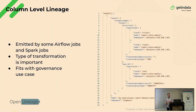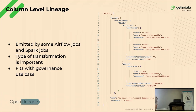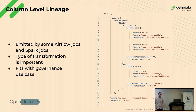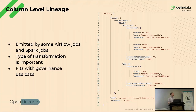Column-level lineage is also implemented as a facet in Open Lineage. In this example, we have a part of an event — the output datasets. We see that this is some BigQuery table and we have information about two columns. The activities column is an aggregation of two columns — clicks and views — from a Postgres table. The user ID column is just a copy of the UID from the Postgres table. The transformation information here is also really important.